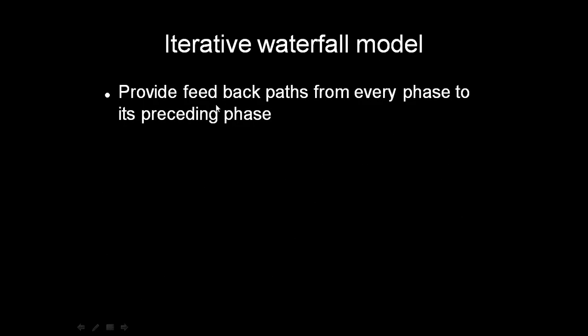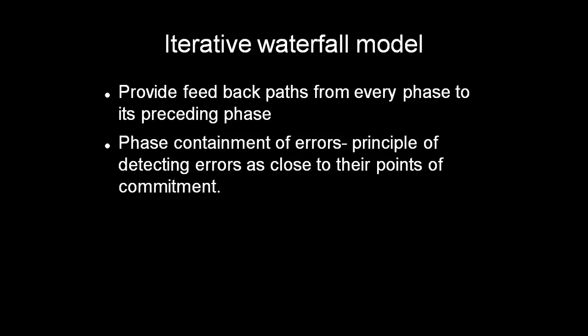It provides a feedback path from every phase to its preceding phase — that is the advantage of this iterative waterfall model. If some error has occurred, we can go back to the preceding phase, correct those errors, and move forward. This is known as phase containment of errors. It is the principle of detecting errors as close to their points of commitment as possible, so that the error won't get propagated.